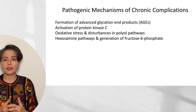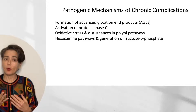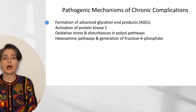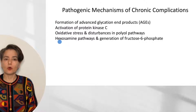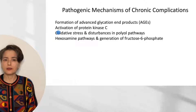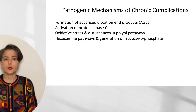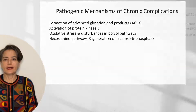This brings us to the pathogenic mechanisms of the chronic complications of diabetes. There are four mechanisms listed here. The most important one — the one I'll spend the most time on — is the formation of advanced glycation end products, or AGEs. The other three are also important but are more complicated, with many mediators involved, and Robbins does not elaborate on them as extensively. So let's focus on advanced glycation end products.